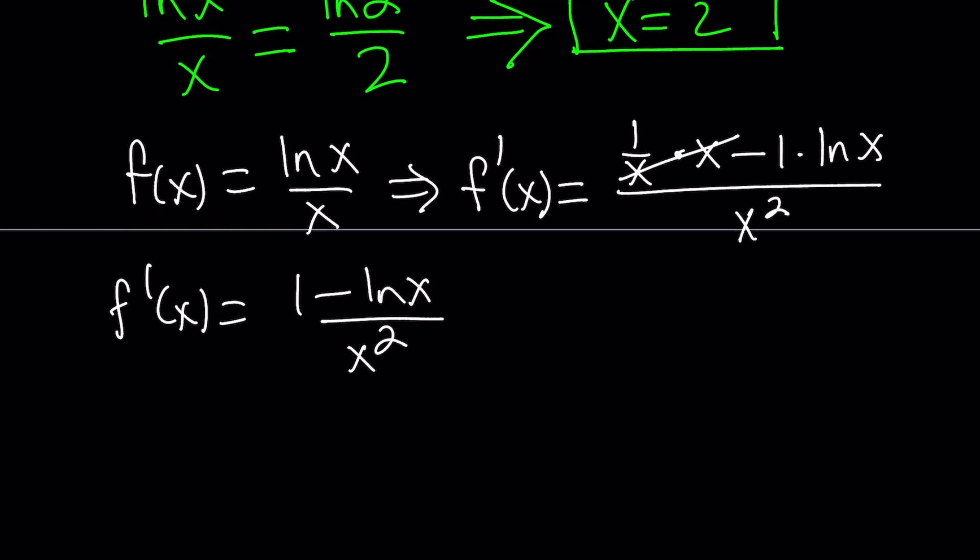So the derivative is important because it gives us an idea how the function behaves, whether it's increasing or decreasing on a certain interval. That's what we're going to do next. We're going to make a table, find out the intervals on which f is increasing and f is decreasing. And from there, we're going to try to find a maximum or a minimum.